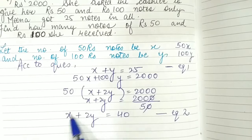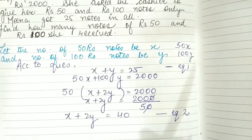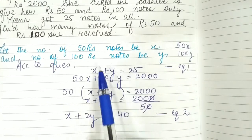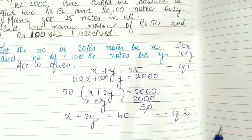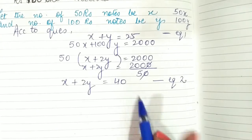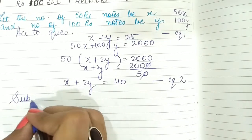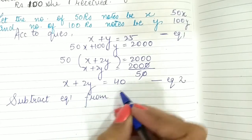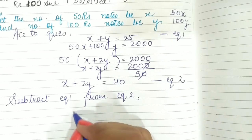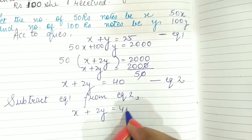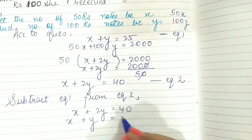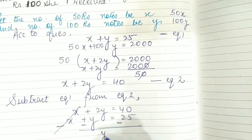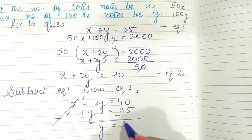The coefficient of x is 1 in both equations and both signs are positive, so we subtract. Subtracting equation 1 from equation 2: x cancels, 2y minus y gives y, and 40 minus 25 gives 15. So y equals 15.